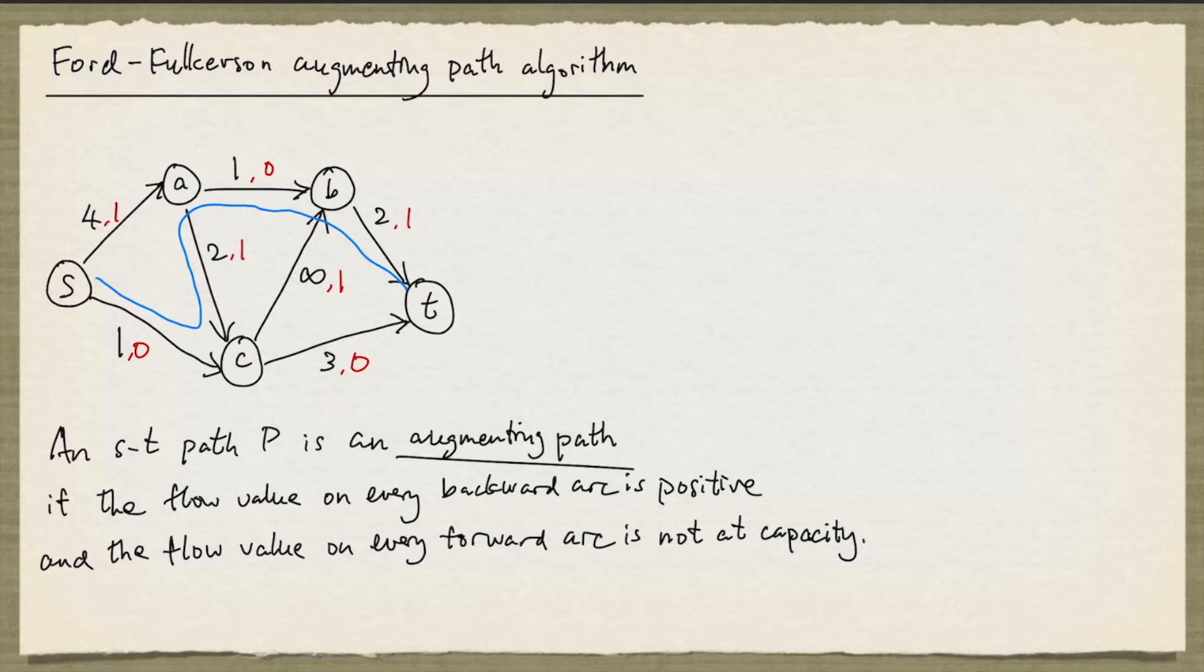In this case, we can increase by 1. So if we increase by 1, this will become 1. This will become 0 because it's a backward arc. Remember that we are decreasing the flow value on every backward arc. And this will be 1, and this will be 2. Notice that this modification does not violate the flow constraints. What we have now here is a new s-t flow. Its value, which is given by the net flow out of s, is 2. Previously, our flow had value 1.